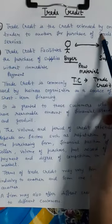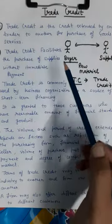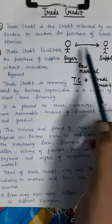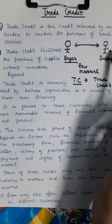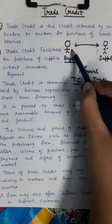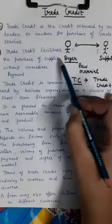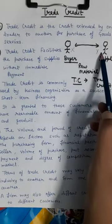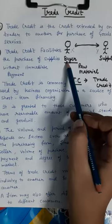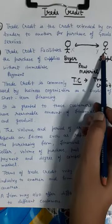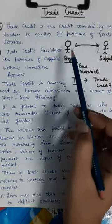Trade credit is the credit extended by one trader to another for the purchase of goods and services. Suppose there are two persons — both are traders. One is a buyer (X) and the other is a supplier (Y) of raw material. Y supplies raw material and X produces goods. X wants to buy raw material from Y, so X is considered a buyer.